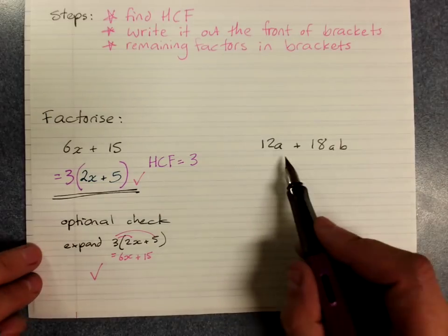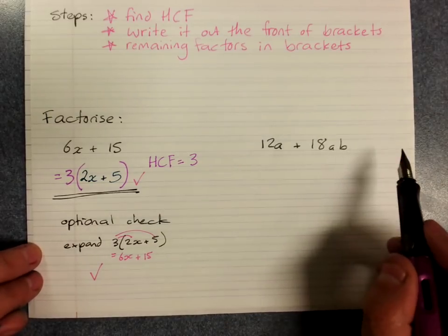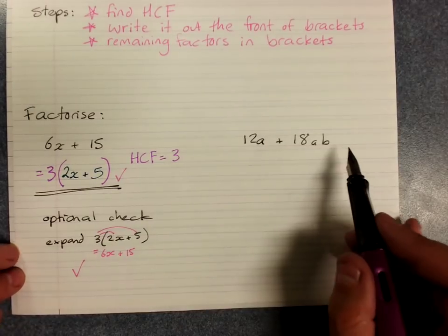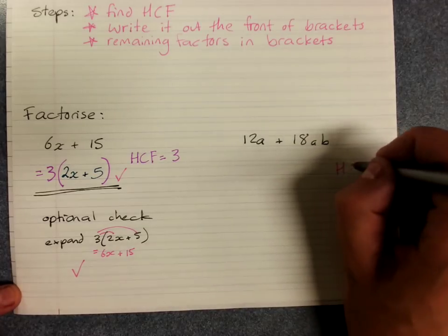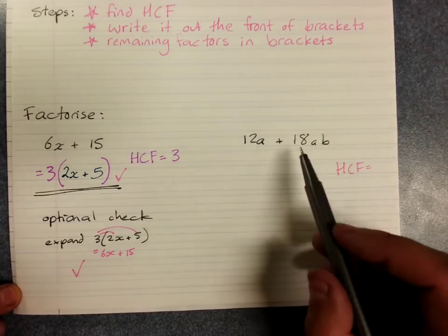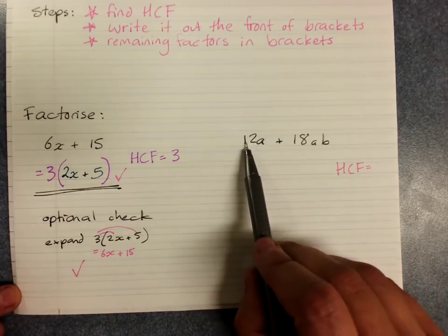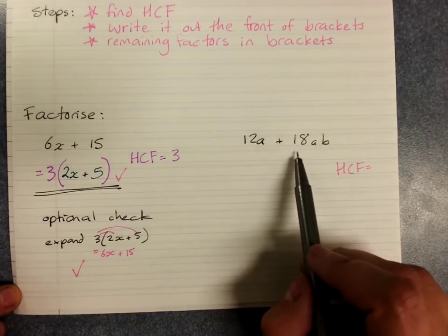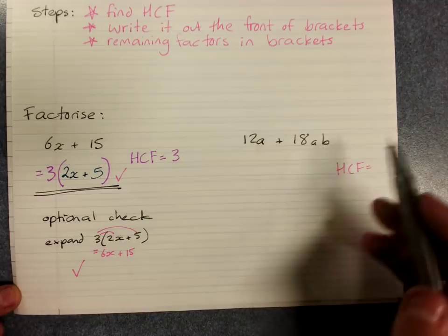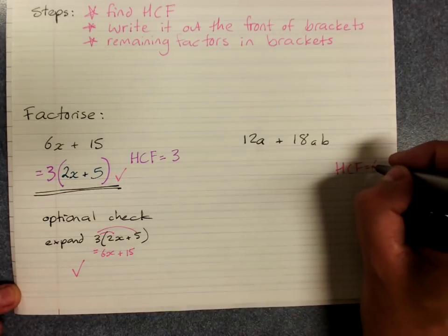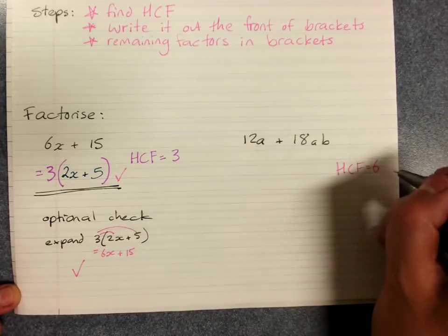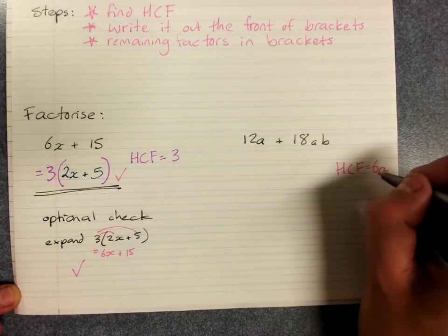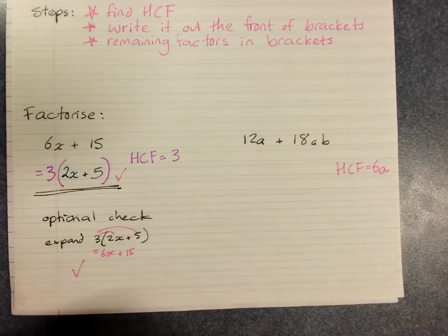Now, factorizing 12a plus 18ab. Here's where we see that your highest common factor can be an algebraic expression. We always write what the HCF is over to the side so that we know we're being sensible about it. 12 and 18. We look for a number factor first. 6 goes into both of those. But a goes into both of these terms. So actually our HCF will be 6a.